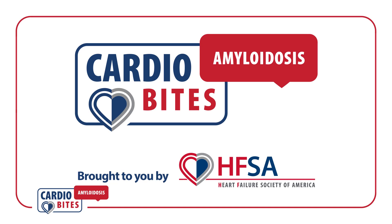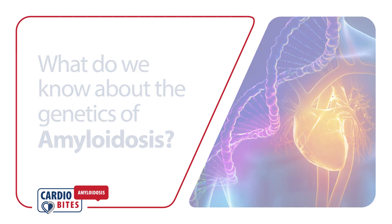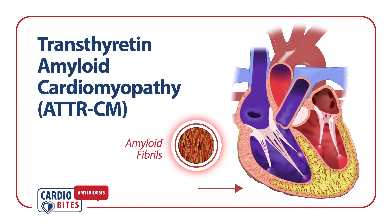CardioBytes, brought to you by the Heart Failure Society of America. What do we know about the genetics of amyloidosis? Transthyretin amyloid cardiomyopathy is a type of amyloidosis associated with thickened heart walls due to the deposition of amyloid fibrils.